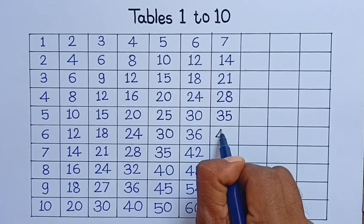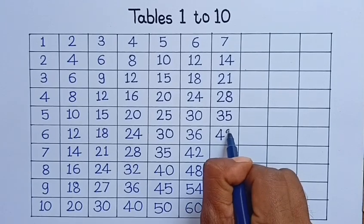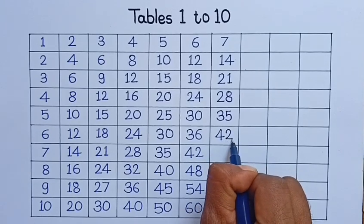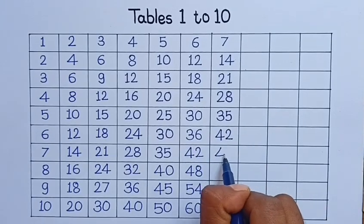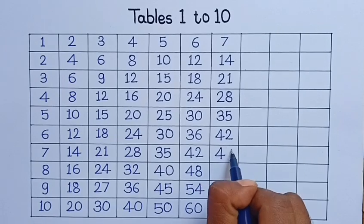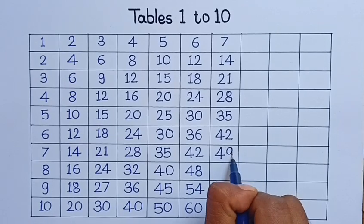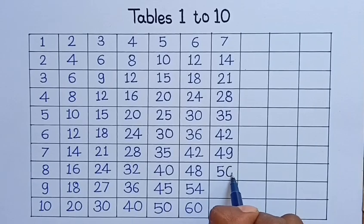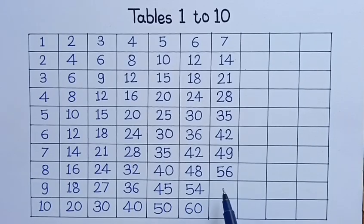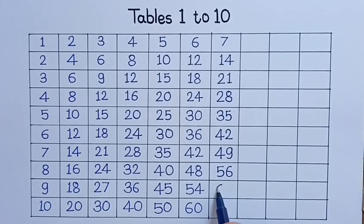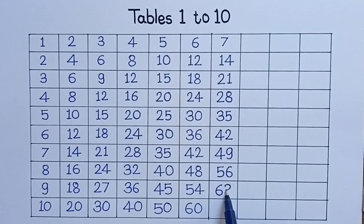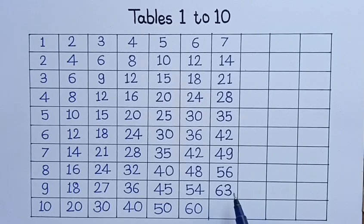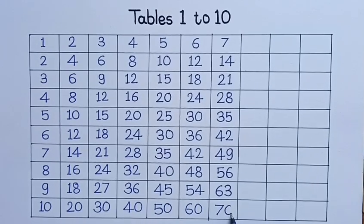7, 6 is 42. 7, 7 is 49. 7, 8 is 56. 7, 9 is 63. 7, 10 is 70.